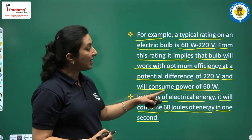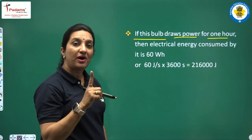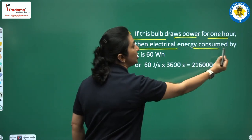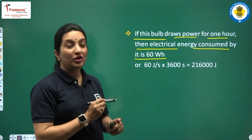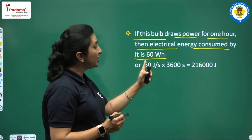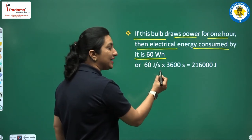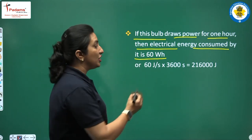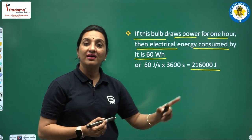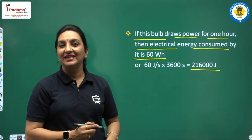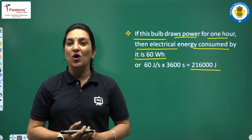If this 60-watt bulb draws power for 1 hour, the electrical energy consumed is 60 watt-hours, which equals 60 joules per second multiplied by 3600 seconds. I believe students that you now understand the power rating and voltage rating written on electrical appliances.